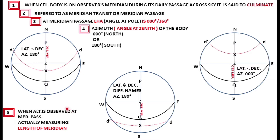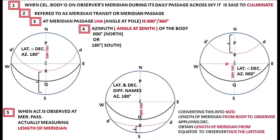When you are observing the altitude at meridian passage, altitude is measured from the rational horizon to the body. What we are actually doing is measuring the length of the meridian. This length of the meridian we converted into zenith distance, and to that we apply the declination — the declination between the equator and the body. After applying this, what we are obtaining is the length of the meridian from the equator to the observer, and thus the latitude.